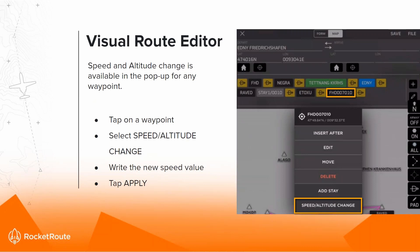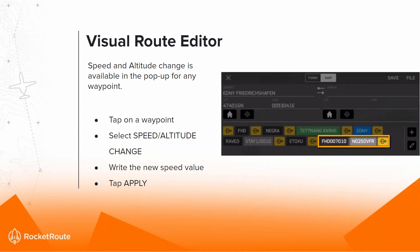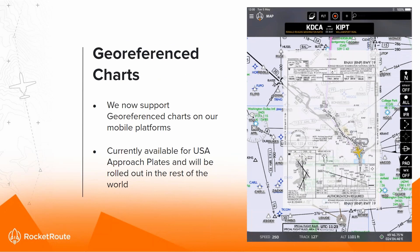If you want to make a change in speed or altitude, this can also be easily completed — tap on the waypoint, select the speed or altitude change, write in the new speed or value, and click Apply.